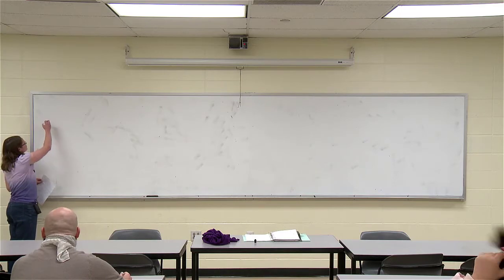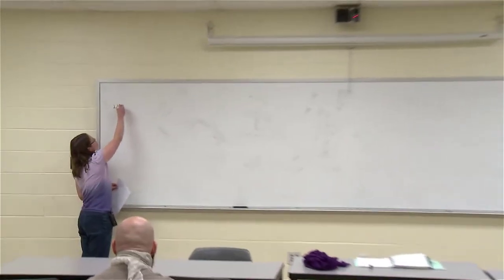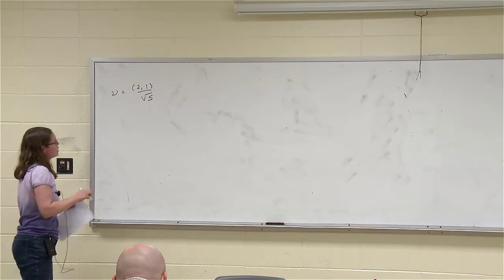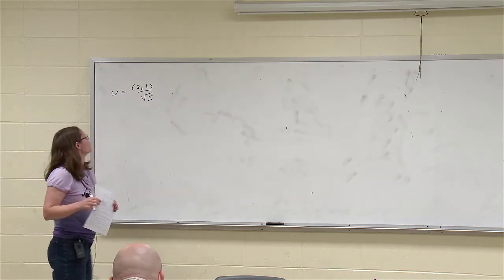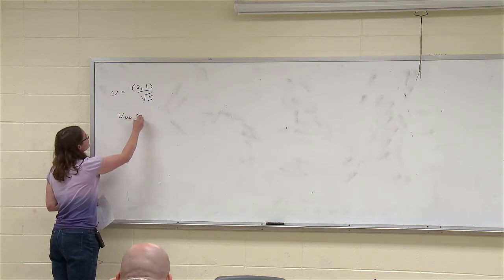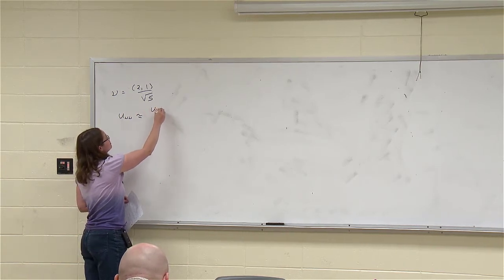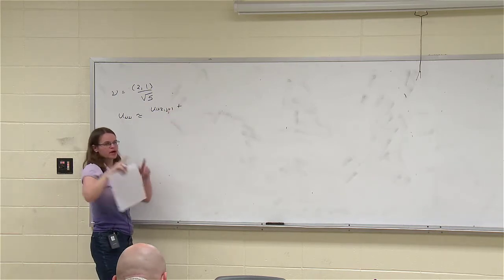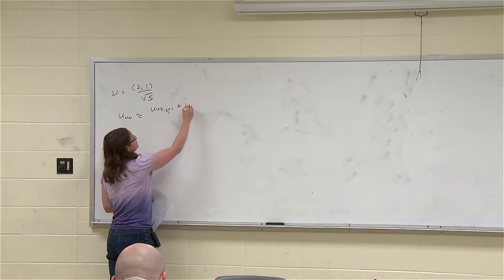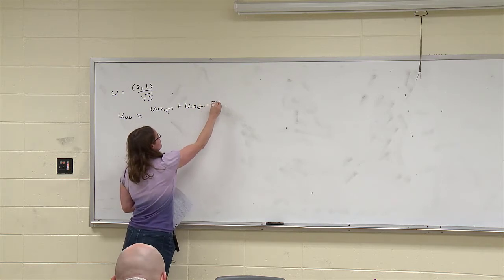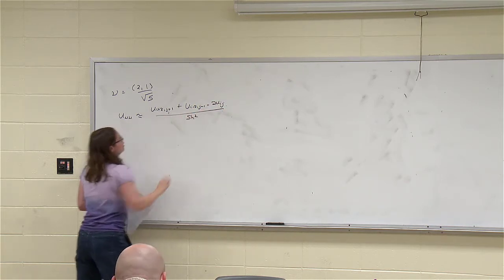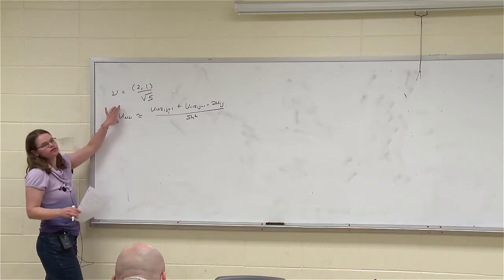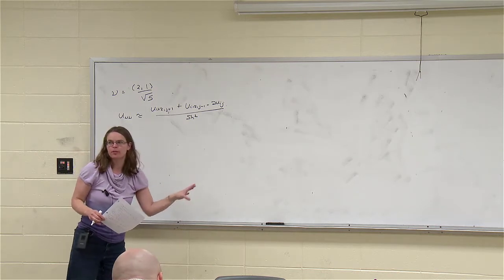One thing we said is: if we happen to have a direction that's grid-aligned, then we can do a center difference. You need to use more than just nearest neighbors — you have to look a little farther away. But then you can say the second derivative in this direction is just a completely normal center difference, except instead of going i+1, i-1, you're going out in some different direction. These second directional derivatives are going to hold the key for how we can discretize the Monge-Ampère equation itself.